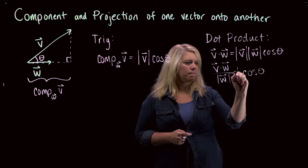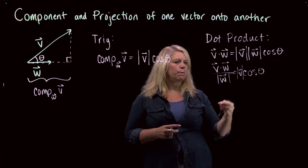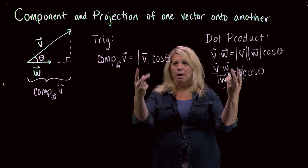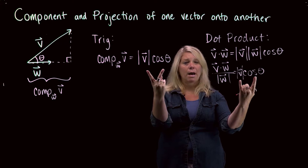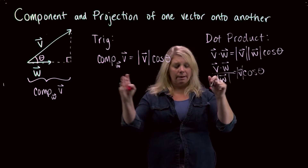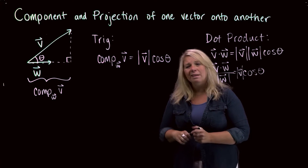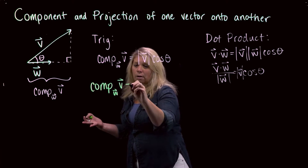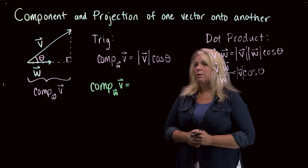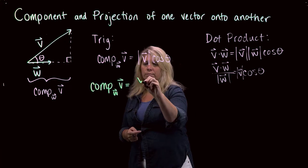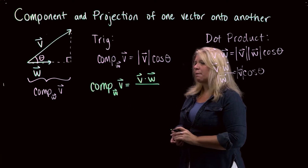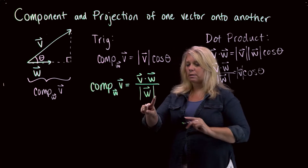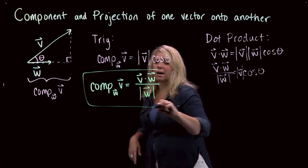Correcting that — making sure the magnitude of V is included. So we get this relationship, and what you'll find in your textbook is the formula for the component of V along W using the dot product: V dot W divided by the magnitude of W. This formula is worth committing to memory. The dot product of the two vectors is divided by the magnitude of the vector you're projecting onto.